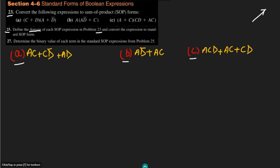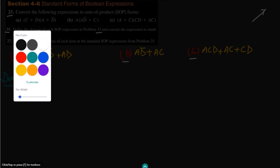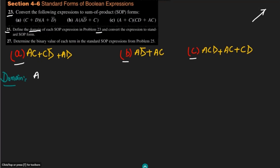Let me first write the domain of these expressions. The domain for part A is A, C, D. Similarly, for part B the domain is also A, C, and D, and for part C we also have A, C, and D. The reason is that all the product terms which are added together are composed of items from the domain. So the domain items are basically those items from which the product terms are constituted.